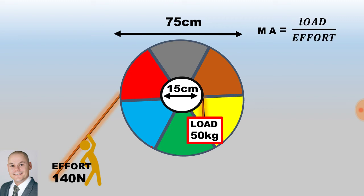To calculate the mechanical advantage it will be the load divided by the effort. Therefore the load of 50 kilograms multiplied by the acceleration of 9.8 to convert it to newtons divided by the effort of 140 newtons, we end up with a ratio of 3.5 for the mechanical advantage.